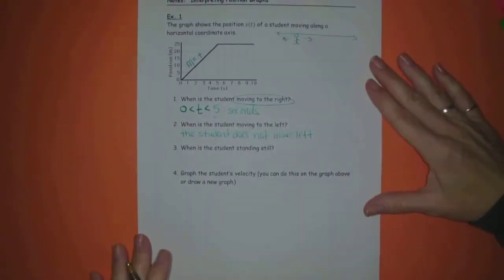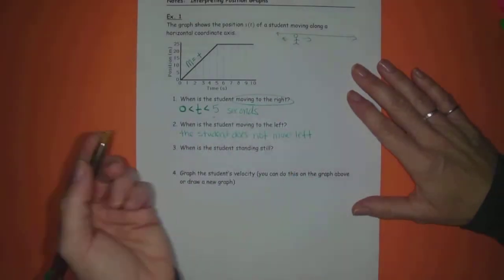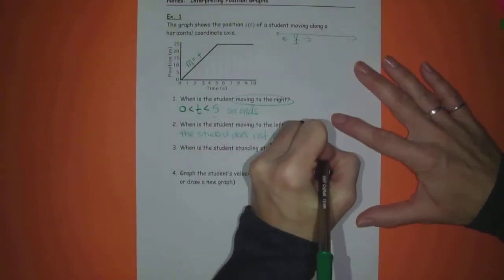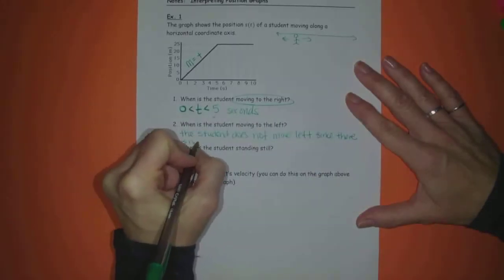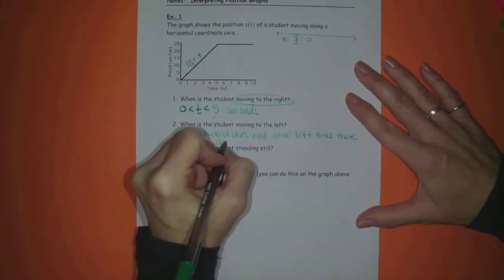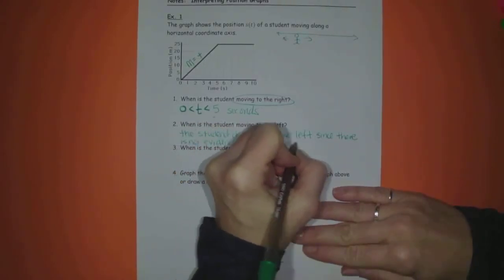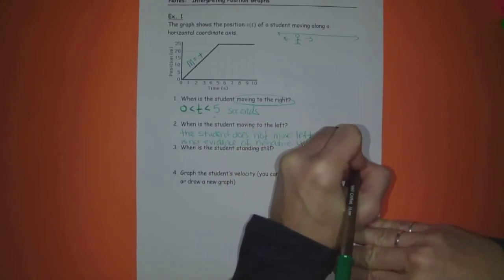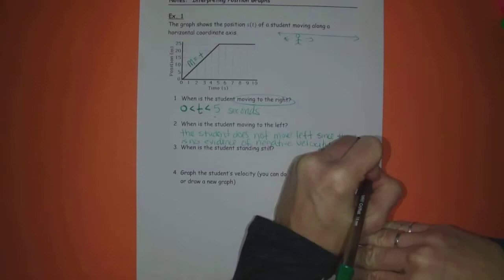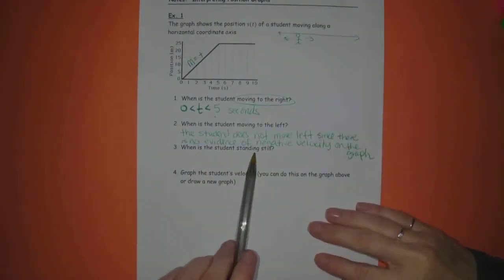We can even put a justification there. The student does not move left since there is no evidence of negative velocity on the graph. Number 3. When is the student standing still?